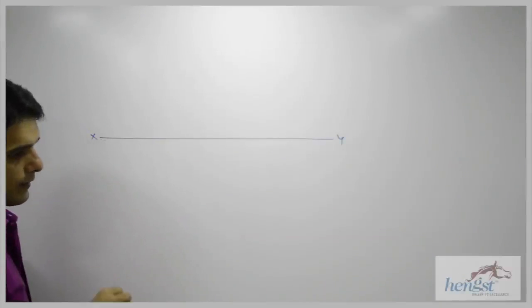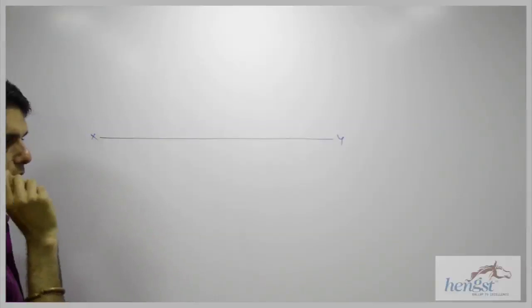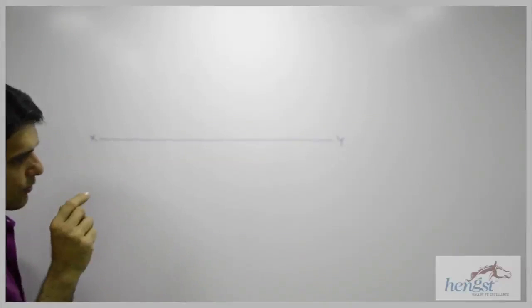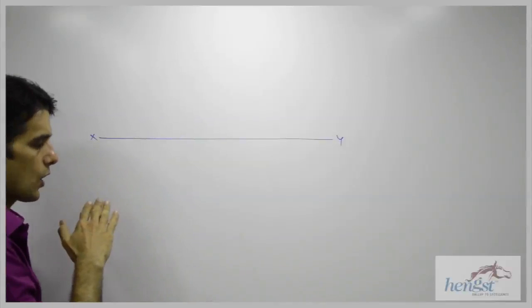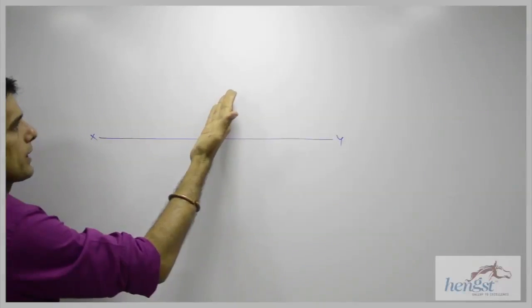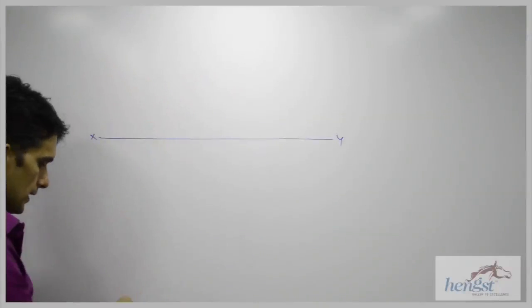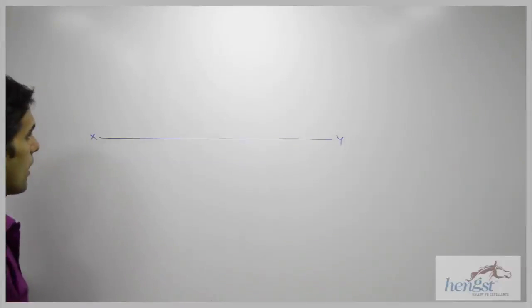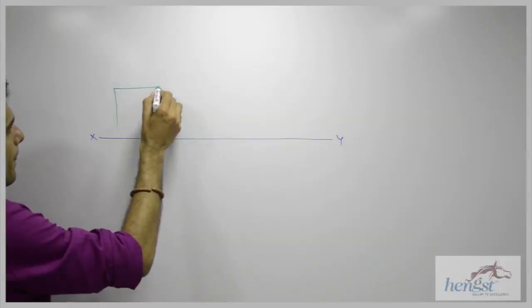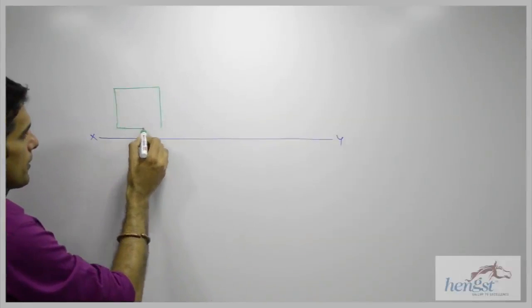Now they have given that the square pyramid is resting on VP, it is resting on one of its triangular surface. So they have said that one of the triangular faces on vertical plane. So if it is on vertical plane, first we will draw it in VP. So we will draw first the square in front view.